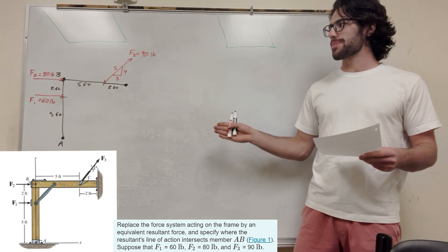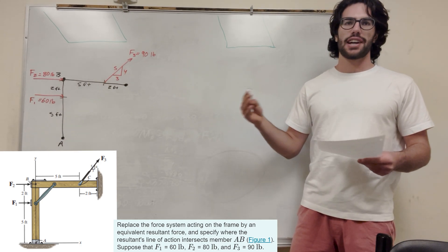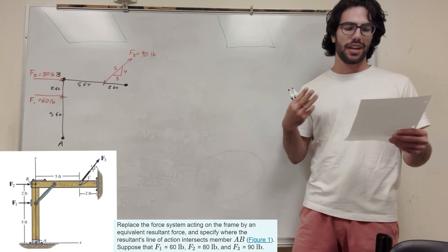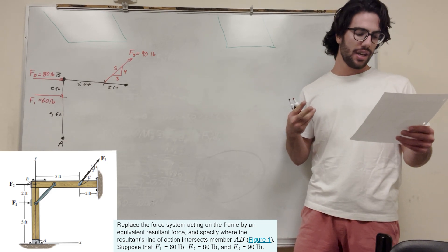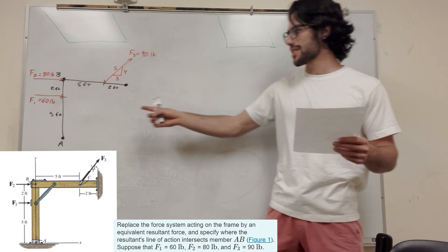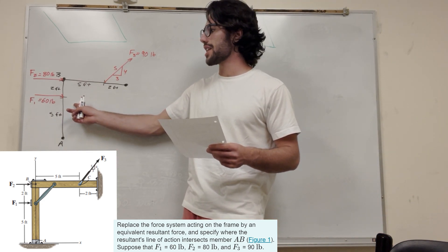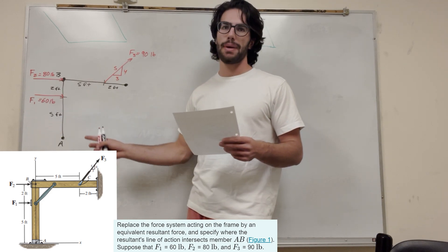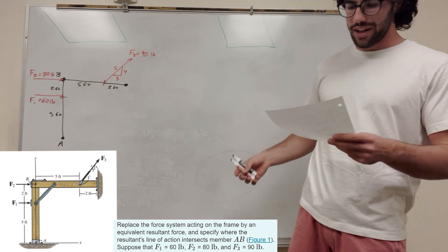What's up, cow gang? Alright, so we got the statics problem here. There's three forces acting on this beam, and it wants us to find three things. We've got to find the resultant force, the angle of the resultant force, and then it wants us to find the distance in the y direction from A at which we can place that resultant force and result in the same moment. So let's go ahead and get started on that.